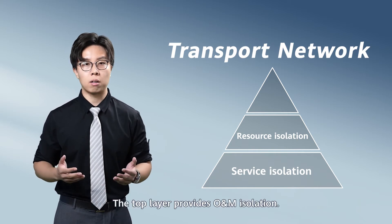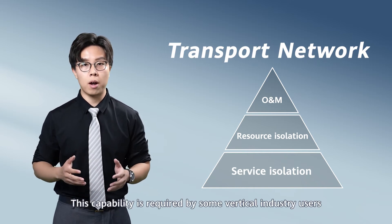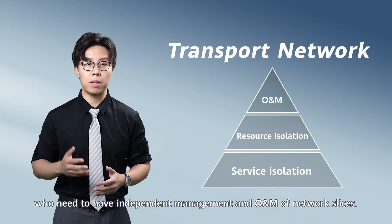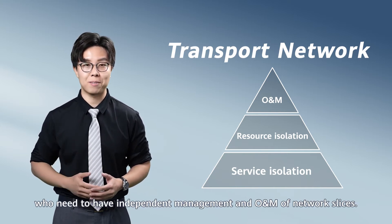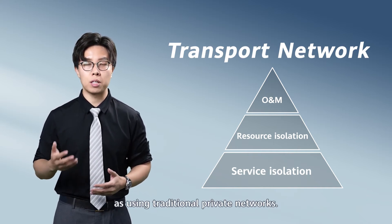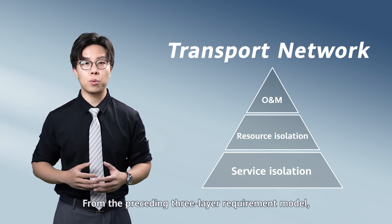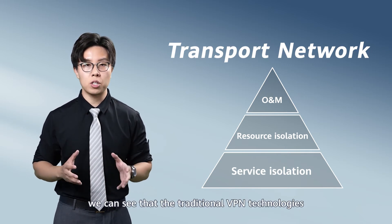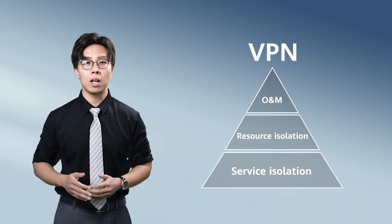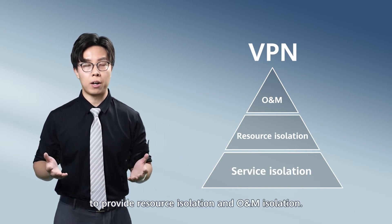The top layer provides O&M isolation. This capability is required by some vertical industry users who need to have independent management and O&M of network slicing. They want to use network slicing in the same way as they use traditional private networks. From the preceding three-layer requirements model, we can see that traditional VPN technologies are unable to meet the requirements of network slicing. Instead, they need to be extended and enhanced to provide resource isolation and O&M isolation.